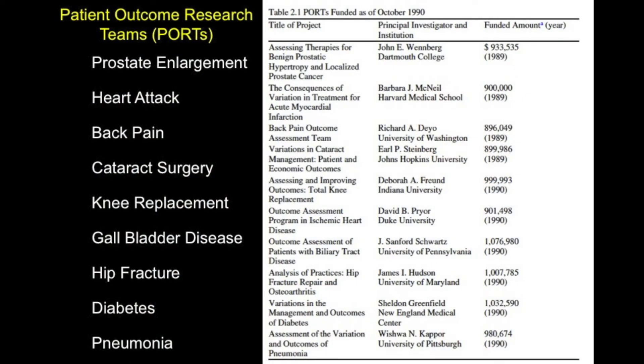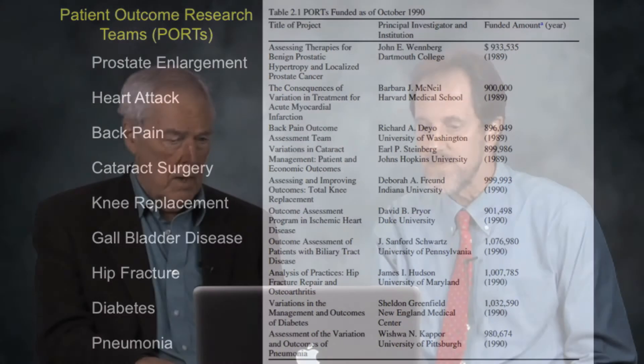Well, let's just talk about the patient outcome research teams for a second. They were called PORTs for short. And here is the list of the PORTs that were active in 1990. The first PORT was for prostate enlargement and it was yours, awarded to Dartmouth College. But there were others across the country: a PORT studying heart attack, one studying back pain, cataract surgery, knee replacement, gallbladder disease, hip fracture, diabetes, and pneumonia.